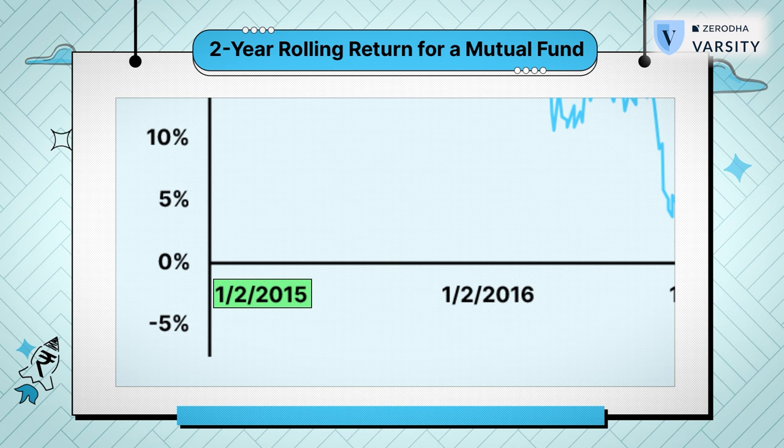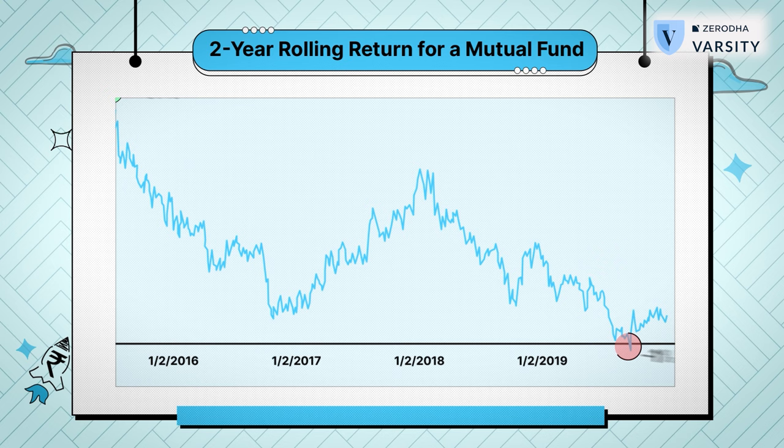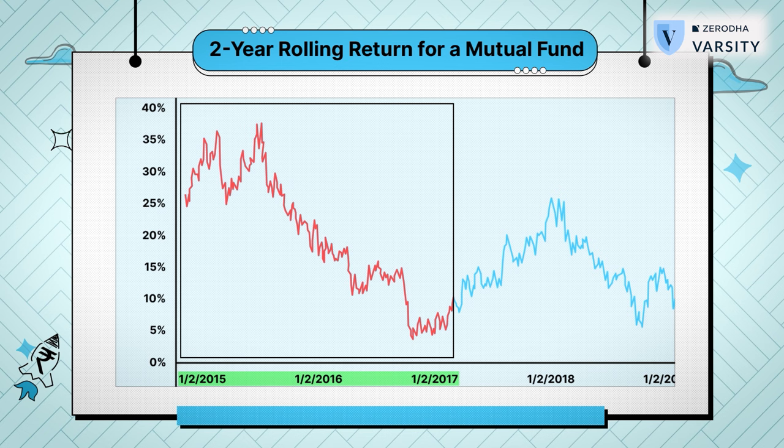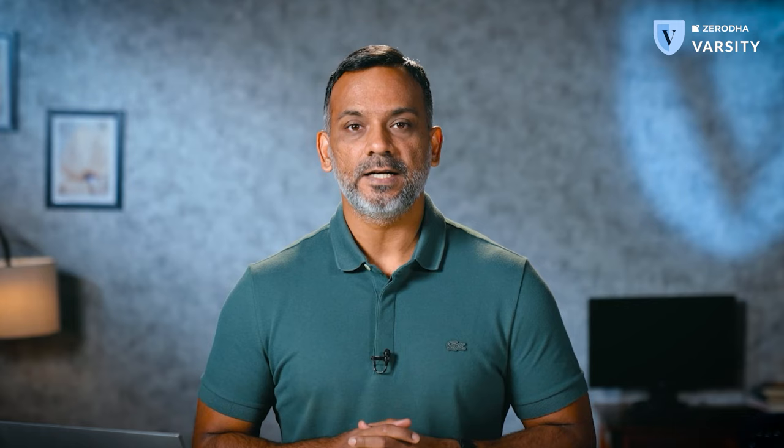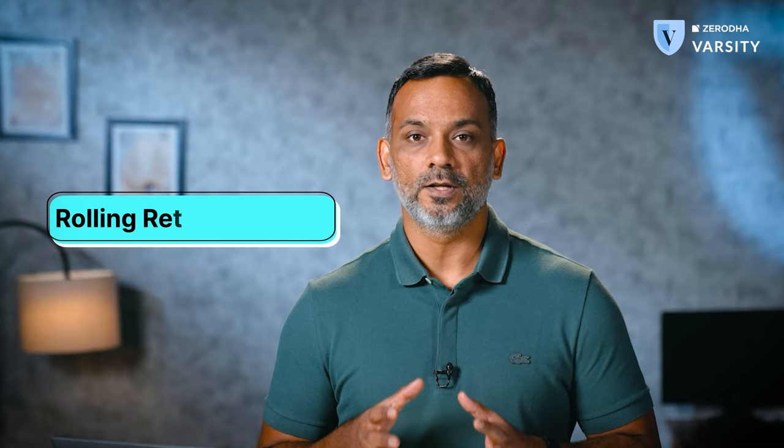I will encourage you to read the chapter in Varsity where I've discussed the math behind rolling returns in greater detail. This is a chart of the rolling return of a mutual fund starting from 2015. As you can see, the 2-year rolling return has ranged from plus 37% to minus 1%. If you were to invest in this fund for 2 years, which I would not recommend, then you should be prepared to experience a return anywhere in this range. But a range is defined by 2 endpoints which are the extreme outcomes. What you instead need is a perspective that will give you what to expect on an average basis, and you can easily assess this by taking the average of the rolling returns itself. This is called the rolling return average.